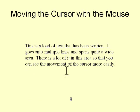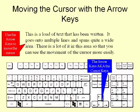You can move the cursor to another part of the text you have written by clicking there with the mouse. However, you can also move the cursor in all four directions by using the arrow keys, also known as the cursor keys.